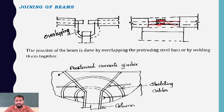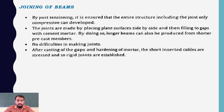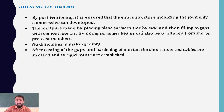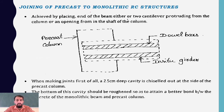Precast concrete girders with stretching cables are used for bridges and heavy structures. In joining of beams by post-tensioning, it is ensured that only compressive stresses develop throughout the entire structure including the joint. Joints are made by placing plain surfaces side by side, filling gaps with cement, producing longer beams from shorter precast members. After hardening of mortar, the inserted cables are stressed, establishing rigid joints.